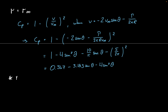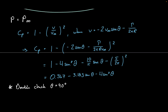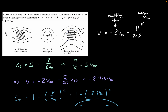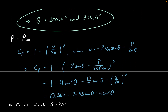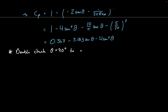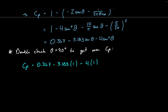We can double-check by evaluating when theta equals 90 degrees, because that should give our minimum CP — at the top of the cylinder where velocity is fastest and pressure is lowest. Plugging in: CP equals 0.367 minus 3.183 times sine of 90 (which is 1), minus 4 times sine squared of 90 (also 1). That leaves us with negative 6.82 — the same result as before, which confirms the previous process was correct.